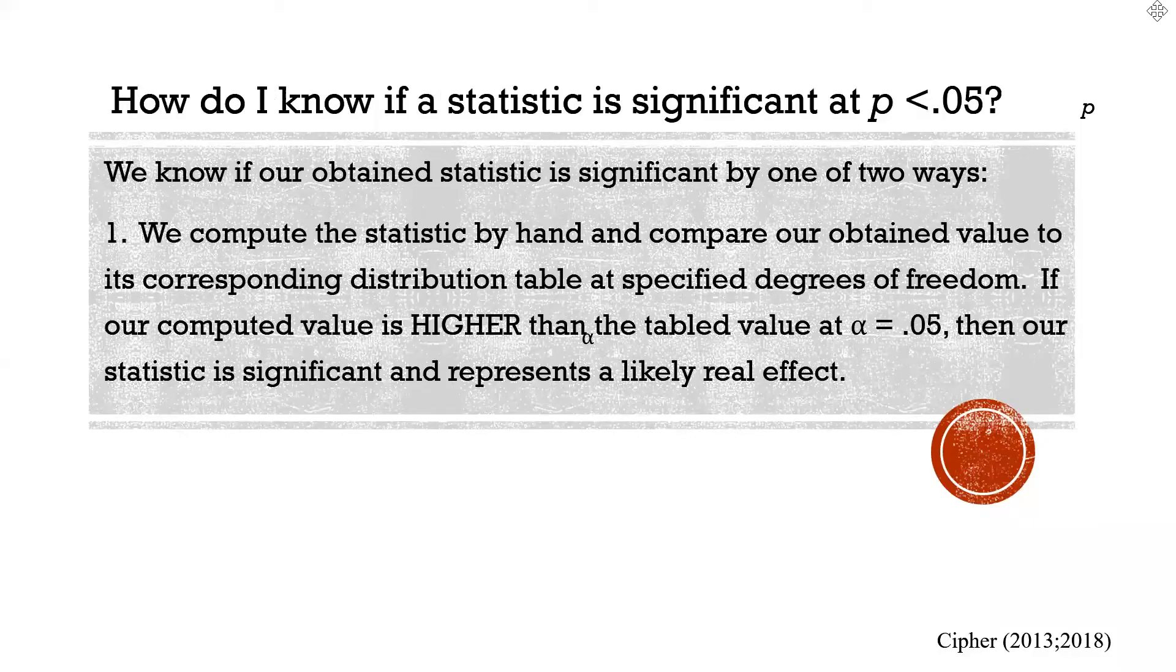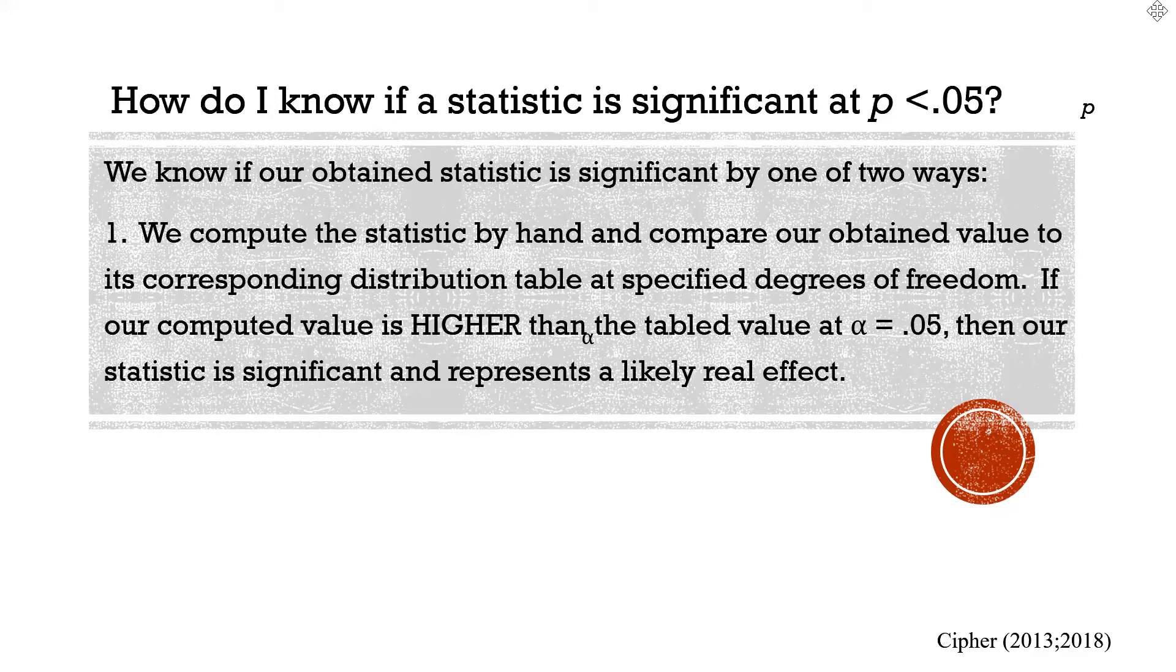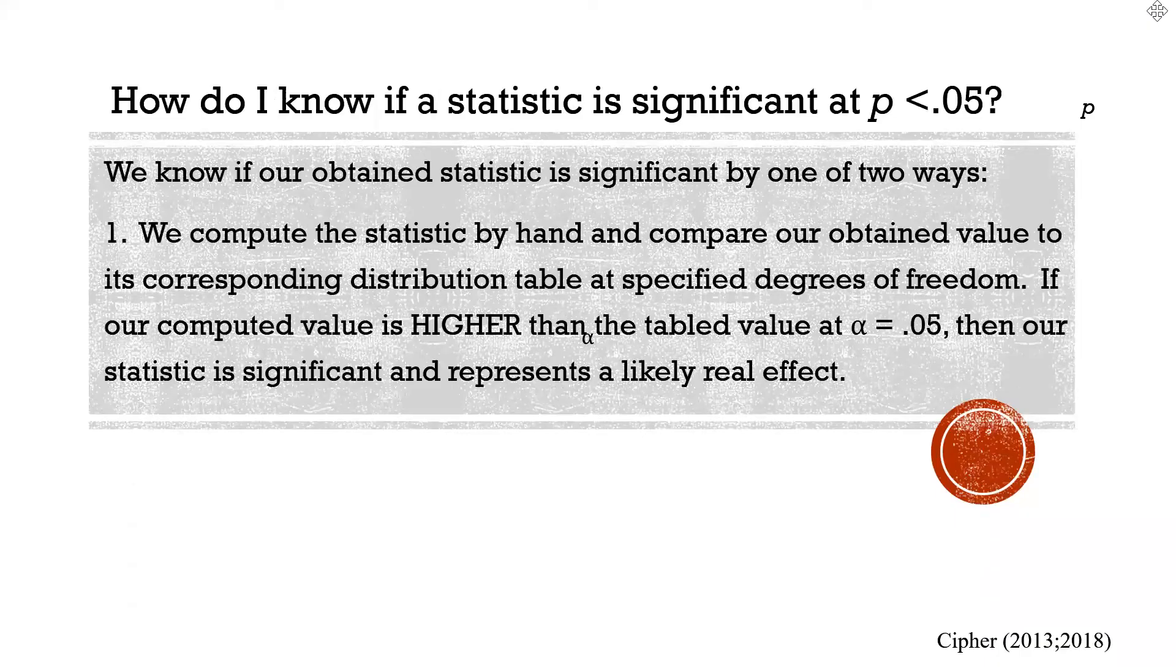So, for example, a Pearson r has its own corresponding theoretical distribution table of r's. And so, we calculate our Pearson r. We have that r value. We take it, compare it to a table at n minus 2 degrees of freedom. I should remind you that every inferential statistic has its own formula for degrees of freedom. Generally, it's tied to sample size. So, when I say n minus 2 for a Pearson r, that means total sample size minus 2.